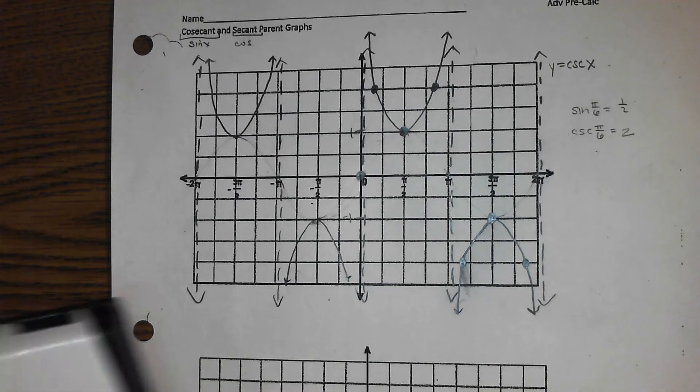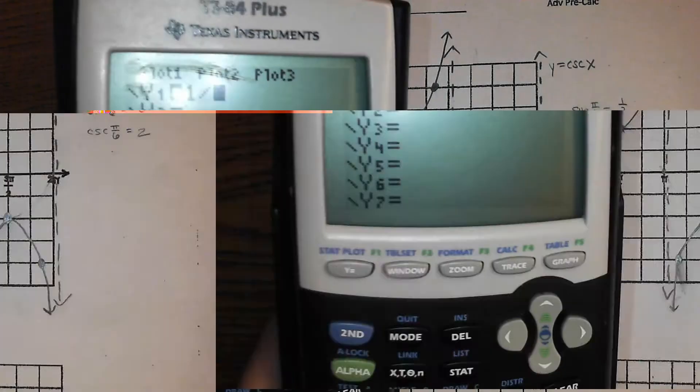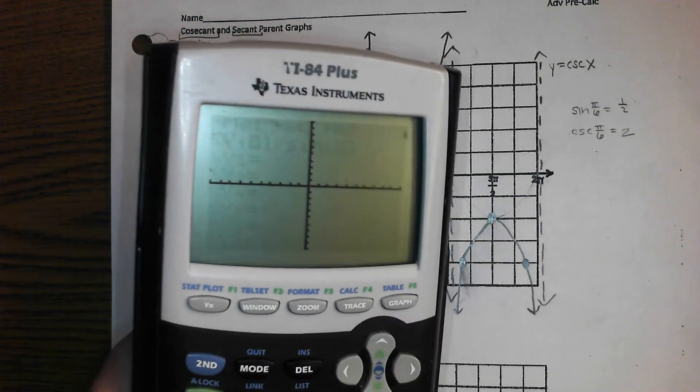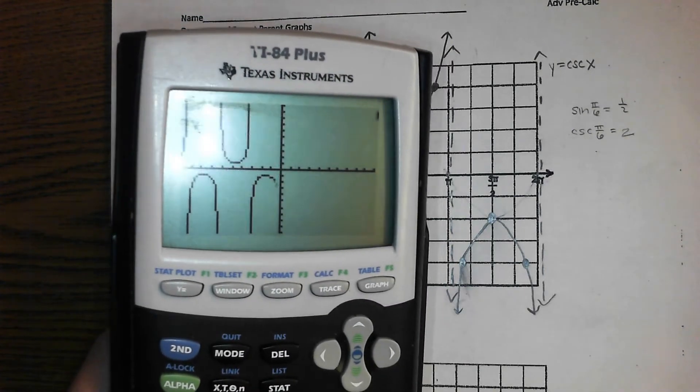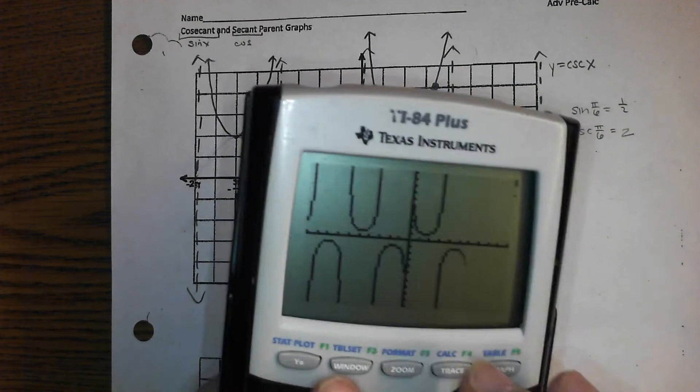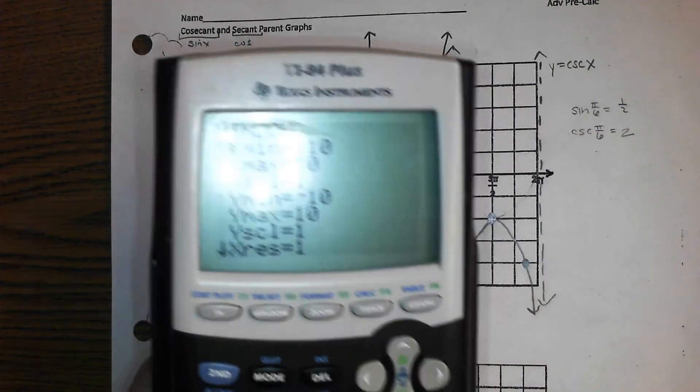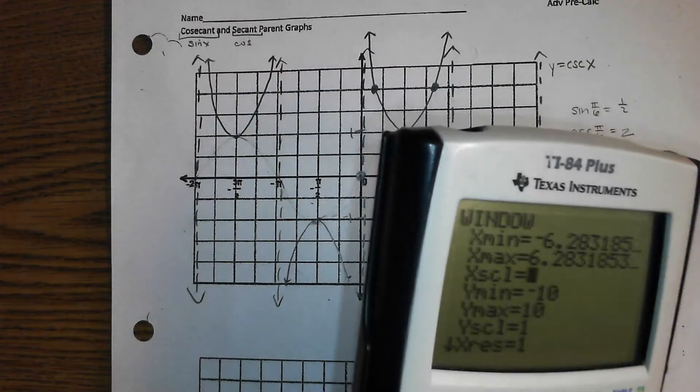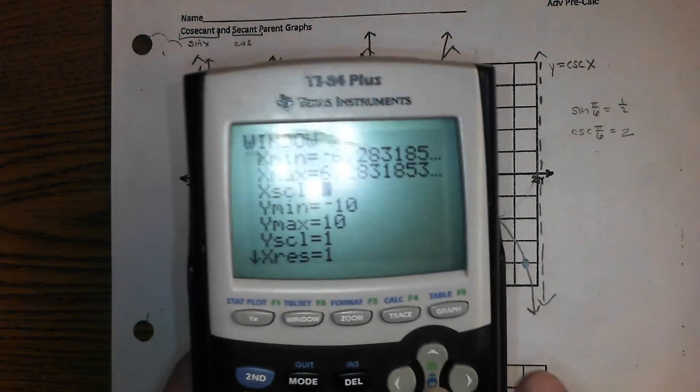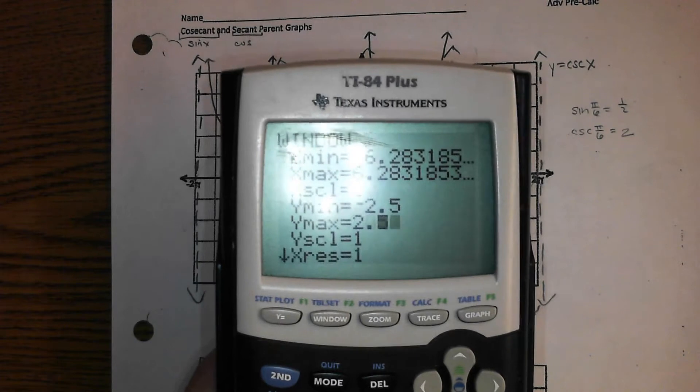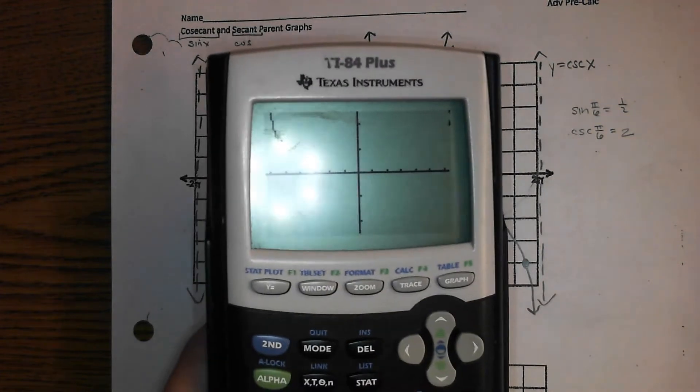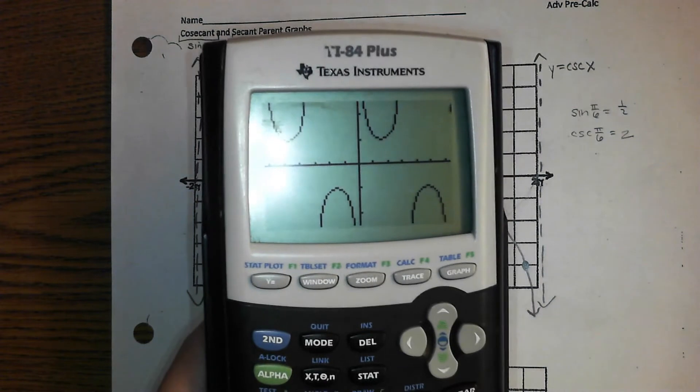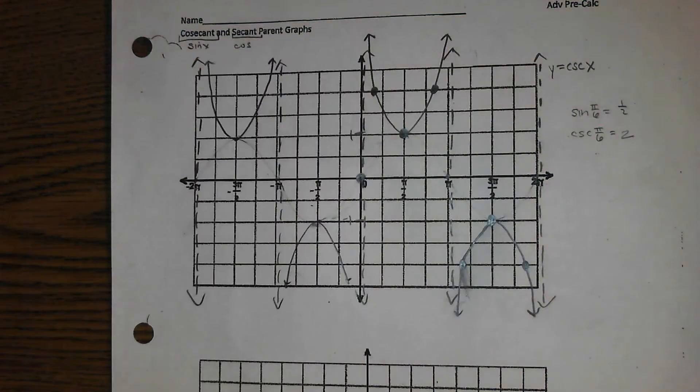To see it on your calculator, you would do 1 over the sine of x. And there it is from negative 2 pi. What's my window here? Negative 2 pi to 2 pi, just so it looks the same as our graph. My graph went up to 2.5. Negative 2.5 to 2.5. So now this should look exactly like your paper. Good? Okay.